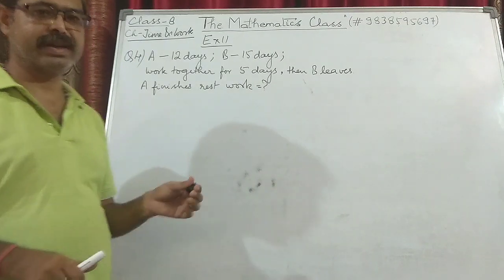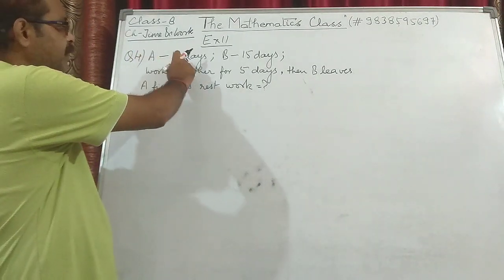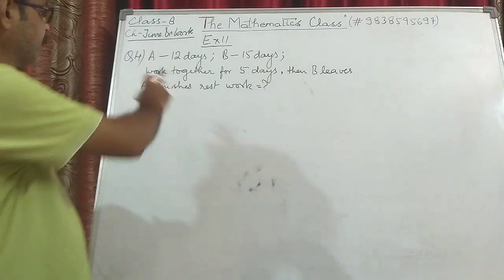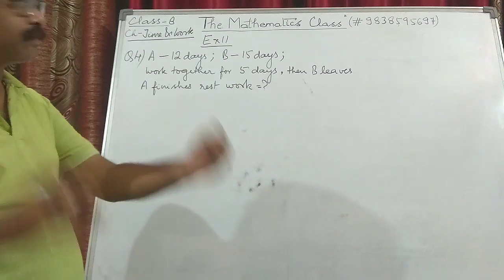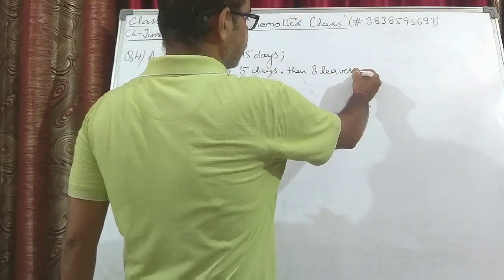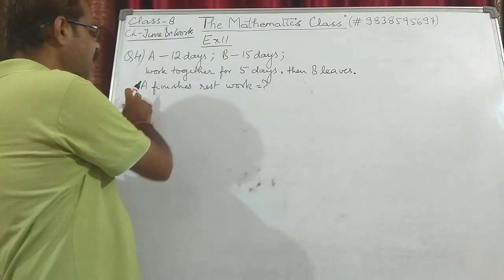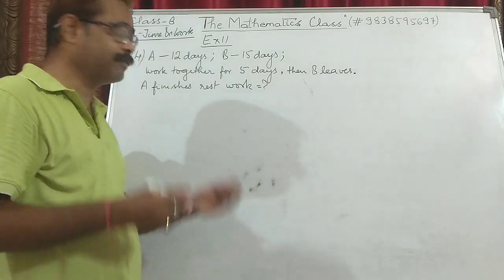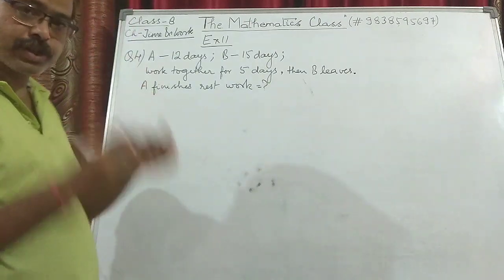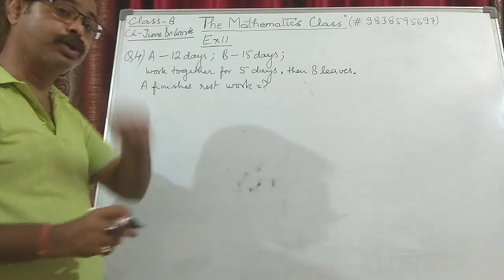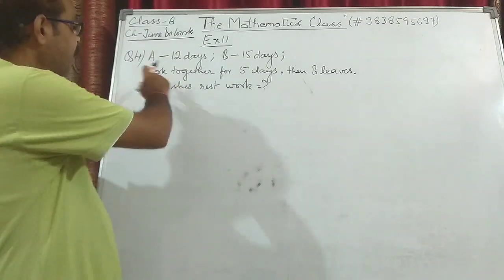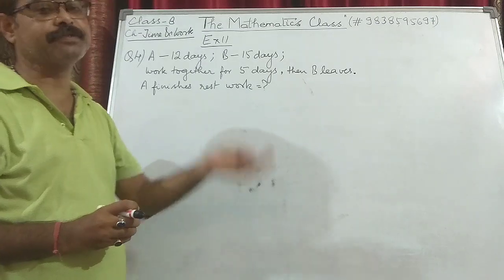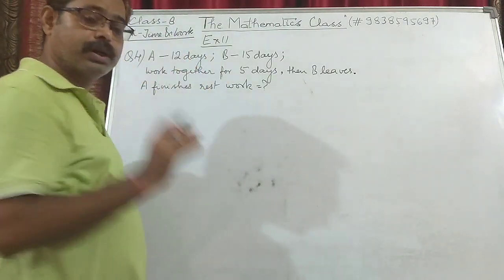Now let's move to Question 4. A can complete the work in 12 days and B can complete the same work in 15 days. They work together for 5 days, then B leaves. We need to find how much time A will take to finish the rest of the work. First, we find their combined one-day work, then how much work is done in 5 days, then how much is left after B leaves, and finally apply the third law.